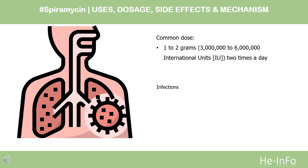Children weighing 20 kilograms (44 pounds) or more: dose is based on body weight. The usual dose is 25 milligrams (75,000 IU) per kg (11.4 milligrams per pound) of body weight, 2 times a day; or 17 milligrams (51,000 IU) per kg (7.7 milligrams per pound) of body weight, 3 times a day.